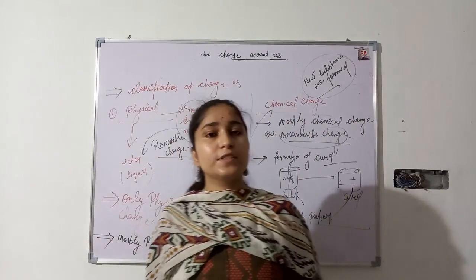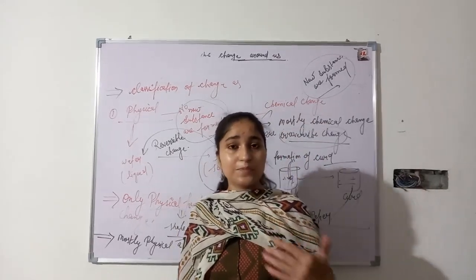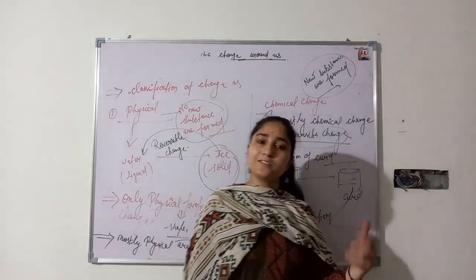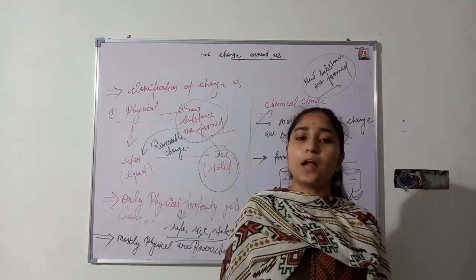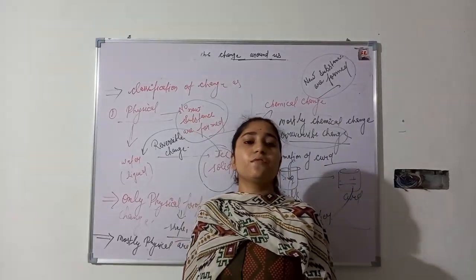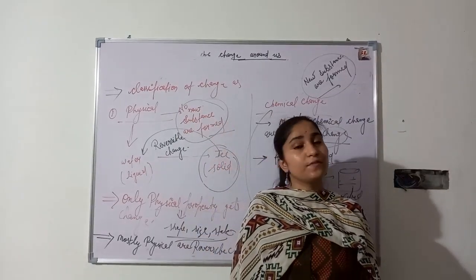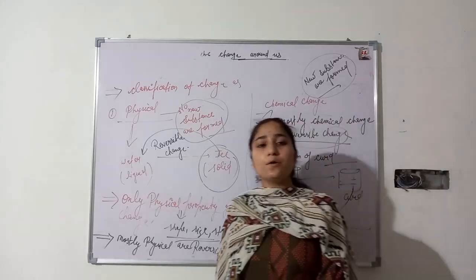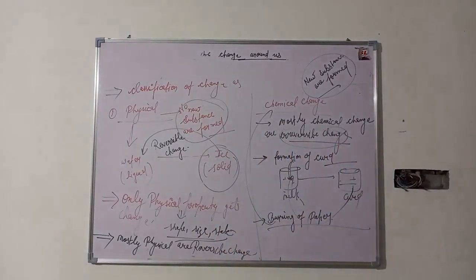Let's sum up what we have discussed today. We discussed what is change — changes occur around us in terms of shape, size, structure, state, and more. Every change has a cause. Change can be classified as human-made or natural change, as physical change or chemical change, and as reversible or irreversible change. I hope you have enjoyed this video and understood very well. Thank you, have a nice day.